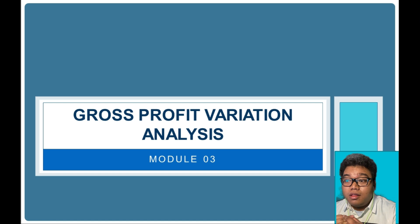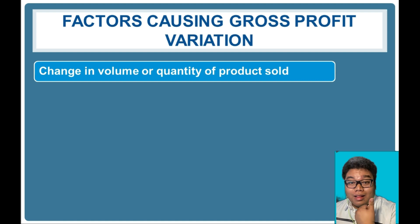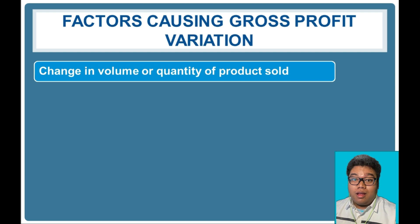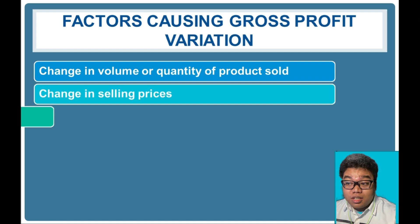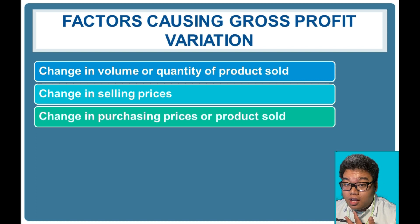The change in gross profit might be brought about by sales price, cost, or quantity sold. One cause is change in volume or quantity sold — we might have sold more or less this year compared to last year. Understanding this helps us identify the source of change in company profit, whether we sold more or simply increased prices. A change in selling price or purchasing price of product sold may also cause an increase or decrease in gross profit.